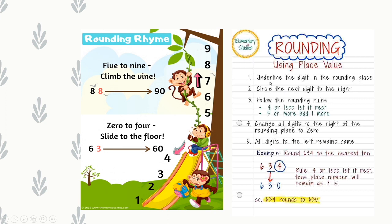Let us see how to round numbers using place value steps. Example: Round 634 to the nearest 10. Step 1: Underline the digit in the rounding place — we are rounding to the nearest 10, so underline the digit in the tens place, which is 3. Step 2: Circle the next digit to the right, which is 4. Step 3: Follow the rounding rules — 4 or less, let it rest. The circled digit is 4, so we let it rest: replace digits to the right with 0 and the tens digit stays the same. So 634 rounded to the nearest 10 is 630.